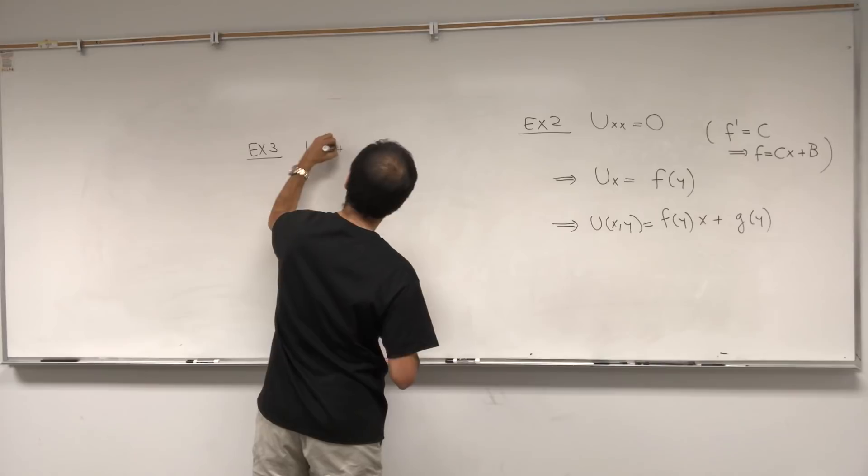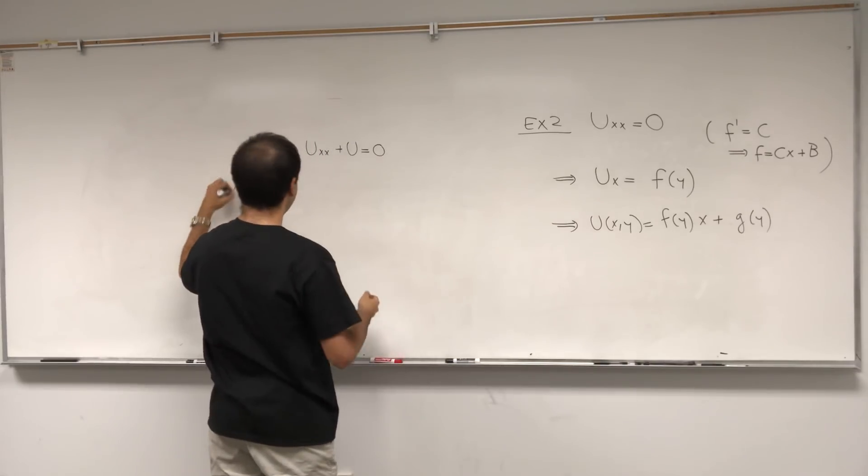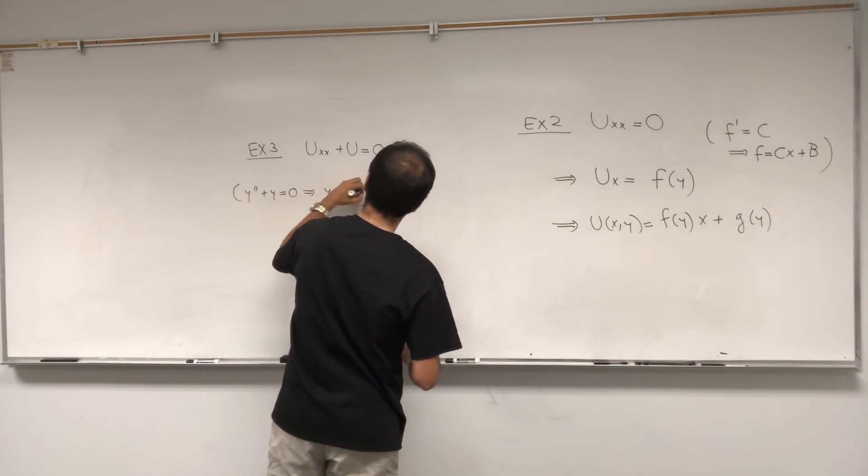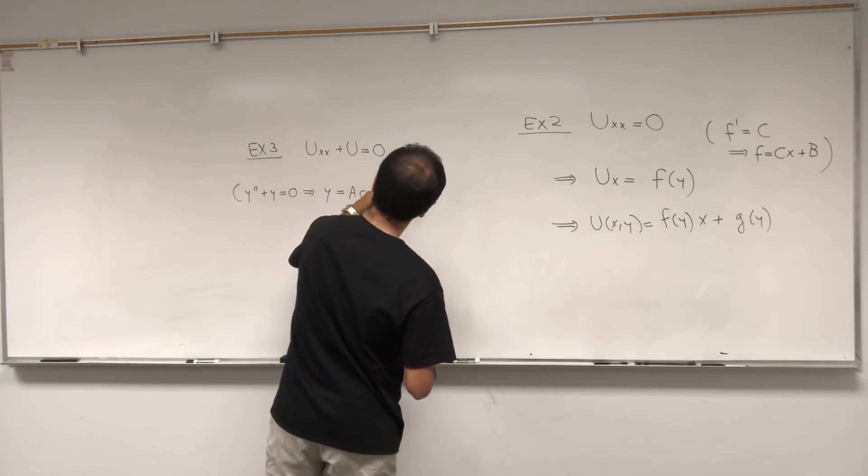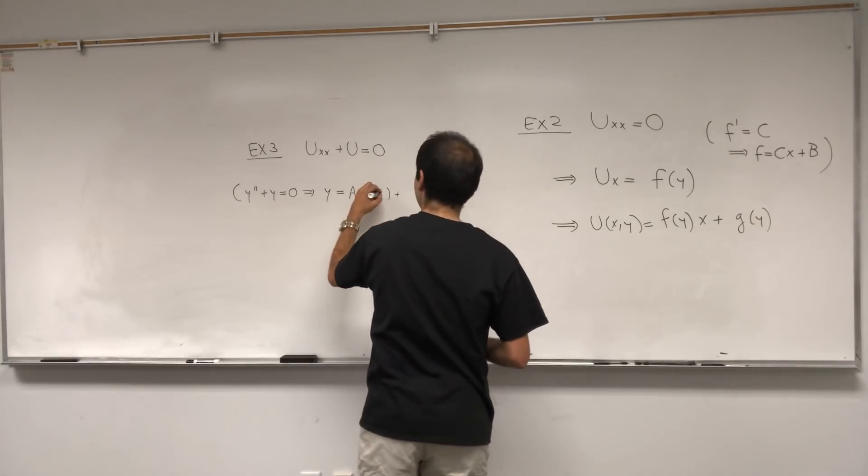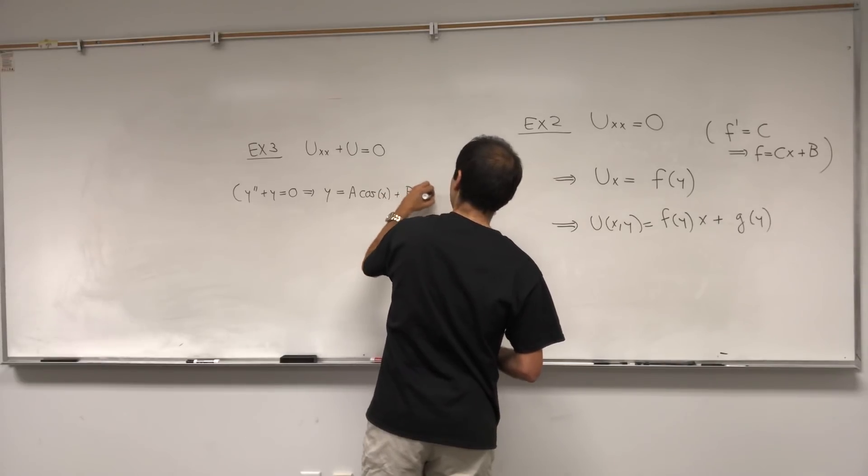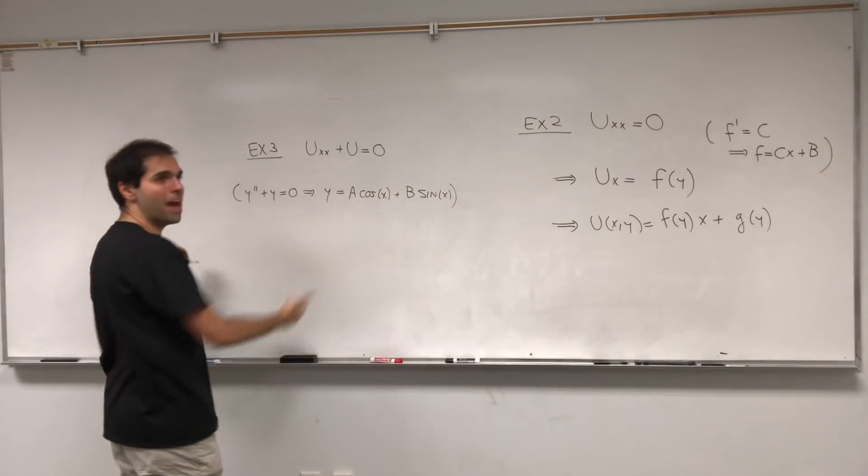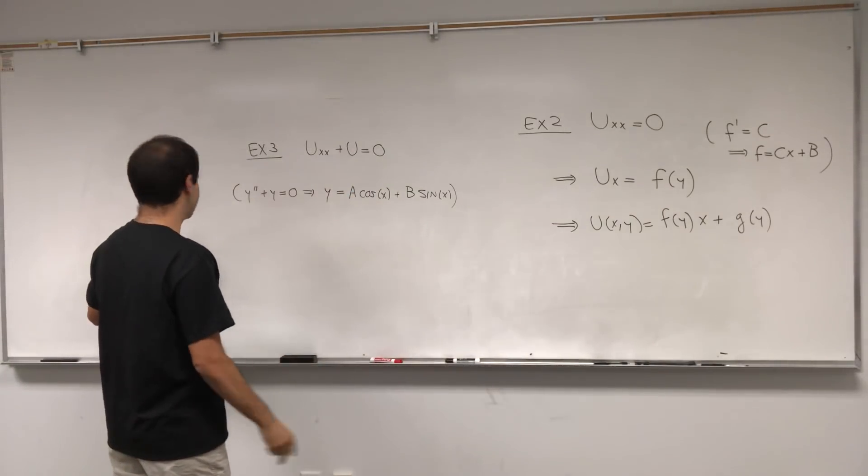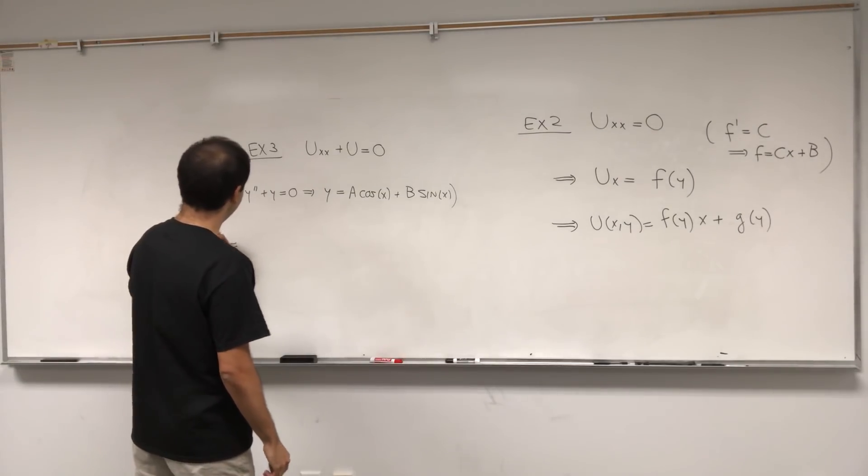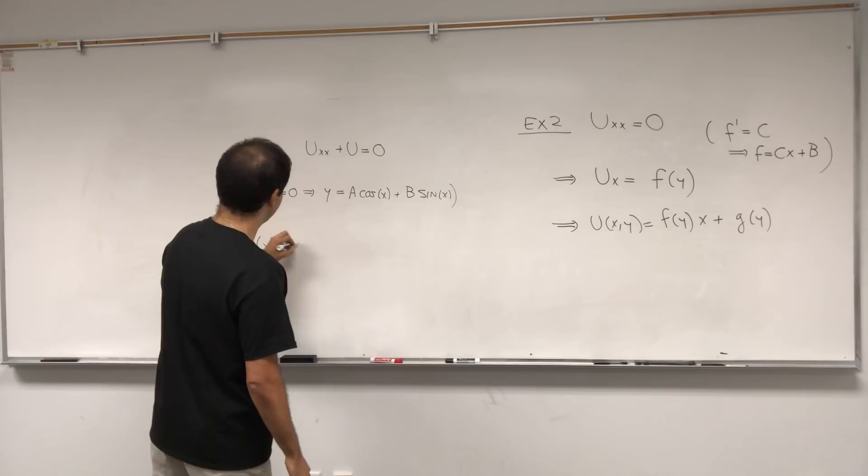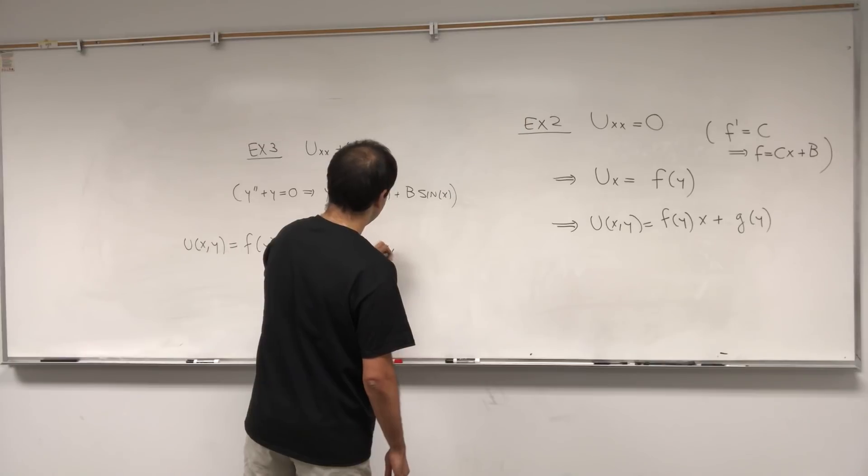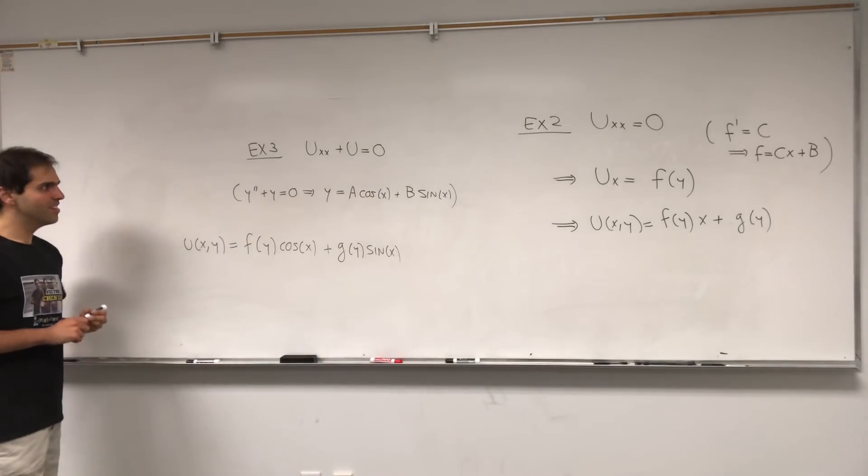Three, what about uxx plus u equals zero? Well, again, by analogy, the solution of y double prime plus y equals zero gives you y is a cosine of t plus b sine of x. Well, it's the same thing except your constants here are independent of x. Therefore, they just depend on y. So u(x,y) is f of y cosine of x plus g of y sine of x. So again, not too bad.